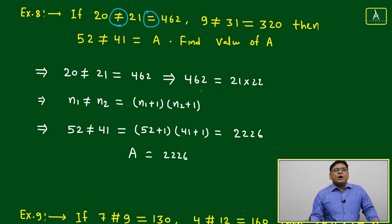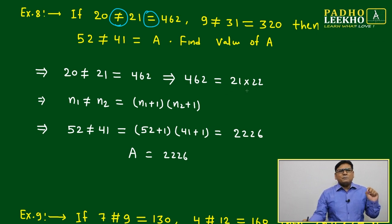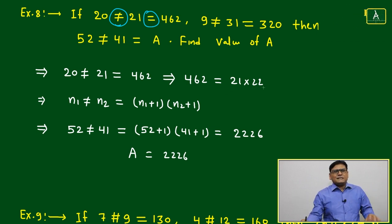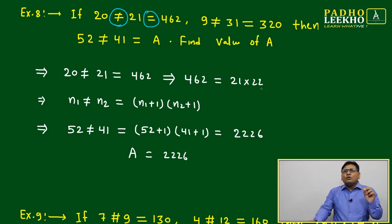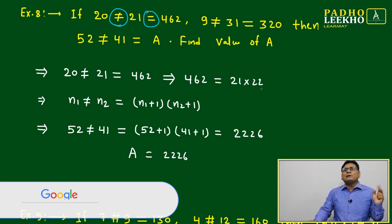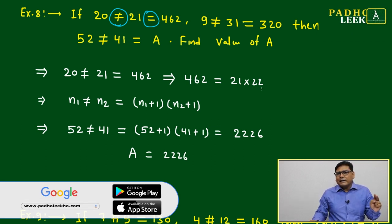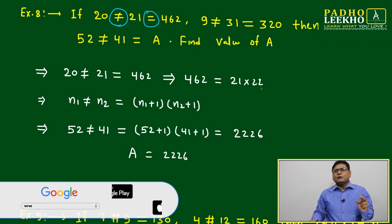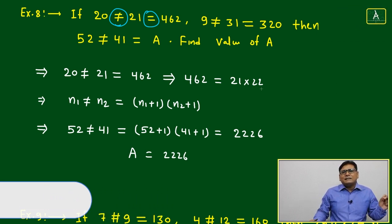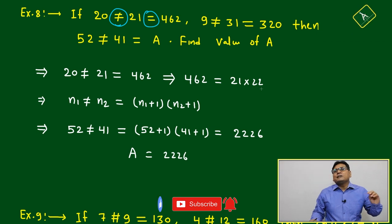462, how will it come? First, we'll use simple logic, just common sense. We are getting output of 462. What is input here? Two digit numbers 20 and 21. If 20 and 21 give us a three digit number output, it must be related by some multiplication. It cannot be related by addition or subtraction, that is 100% sure.